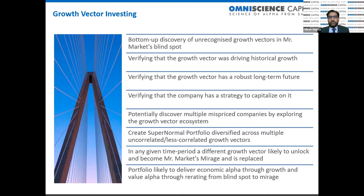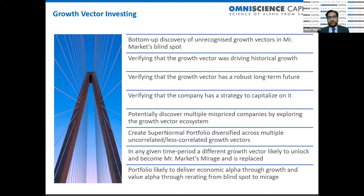Once verified, the question is to discover multiple mispriced companies by walking around the ecosystem. Take 5G as an example: the main firm might be fairly or under-priced, but you go around the value chain — up, down, and adjacent — finding suppliers, marketing partners, distributors, and service providers all likely to benefit. You find a set of mispriced companies across the ecosystem and construct a supernormal portfolio of multiple uncorrelated growth vectors.